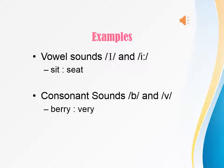For example, in consonant sounds, the minimal pair /b/ and /v/, like in 'berry' and 'very.' Another consonant minimal pair is /b/ and /p/, like in 'by' and 'pie'.